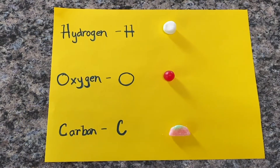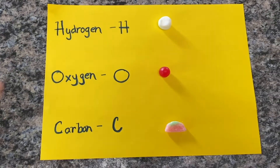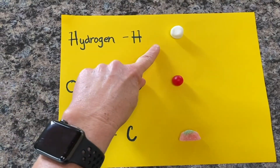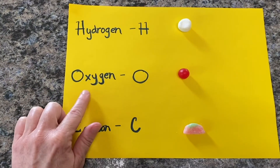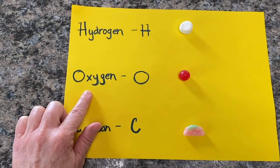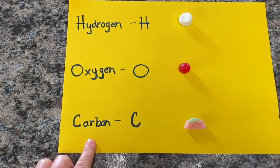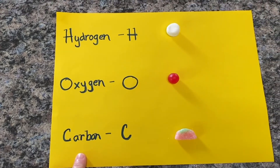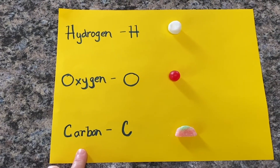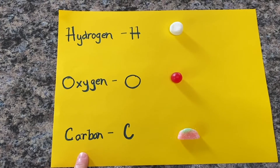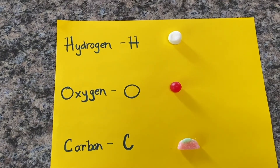Now that we know all about atoms, electrons, neutrons, and protons, let's start to make some molecules. Here we have our key: our hydrogen atoms are going to be a marshmallow, our oxygen atoms are going to be cherry candy, and our carbon atoms are going to be sour watermelons. So when we start to make our molecules, we'll know exactly what kind of molecule it is just by looking at the candy.